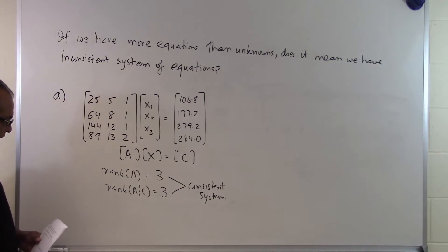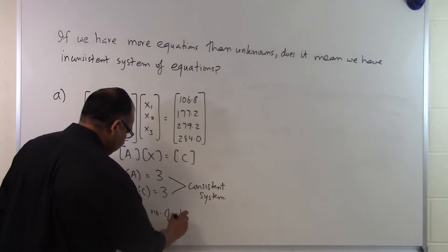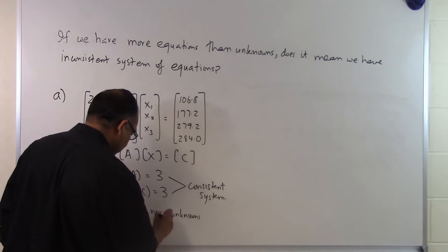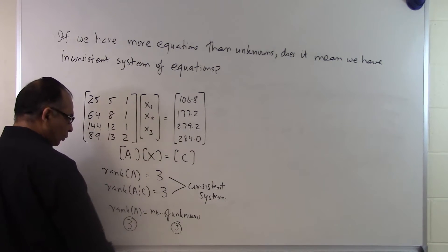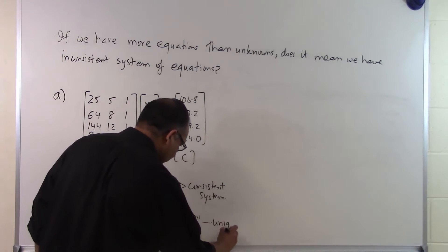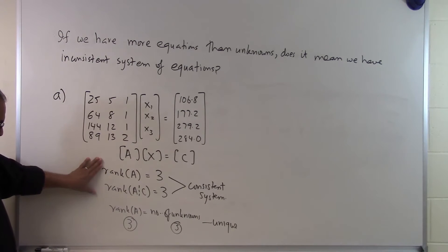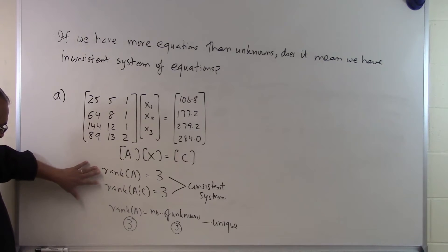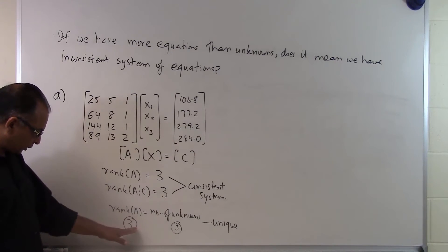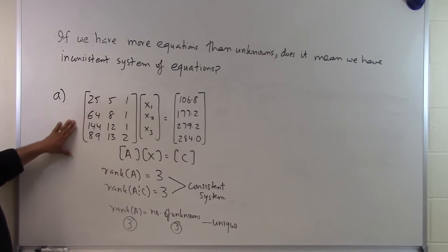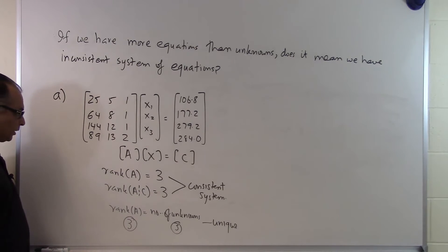Not only that, since the rank of A equals the number of unknowns — rank of A is 3, and the number of unknowns x1, x2, x3 is also 3 — this means the system has a unique solution. So for this case of 4 equations and 3 unknowns, we have a consistent system with a unique solution.